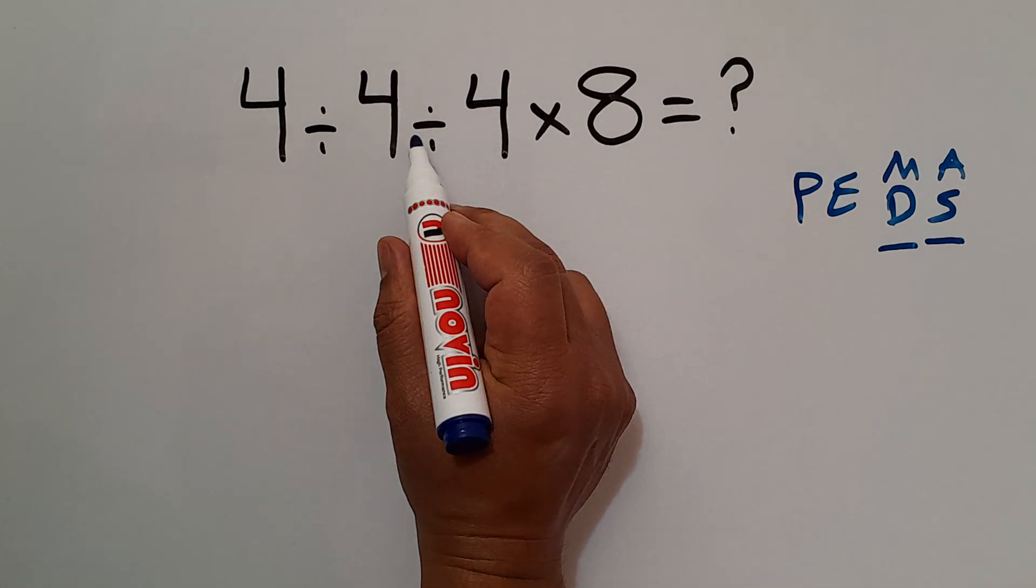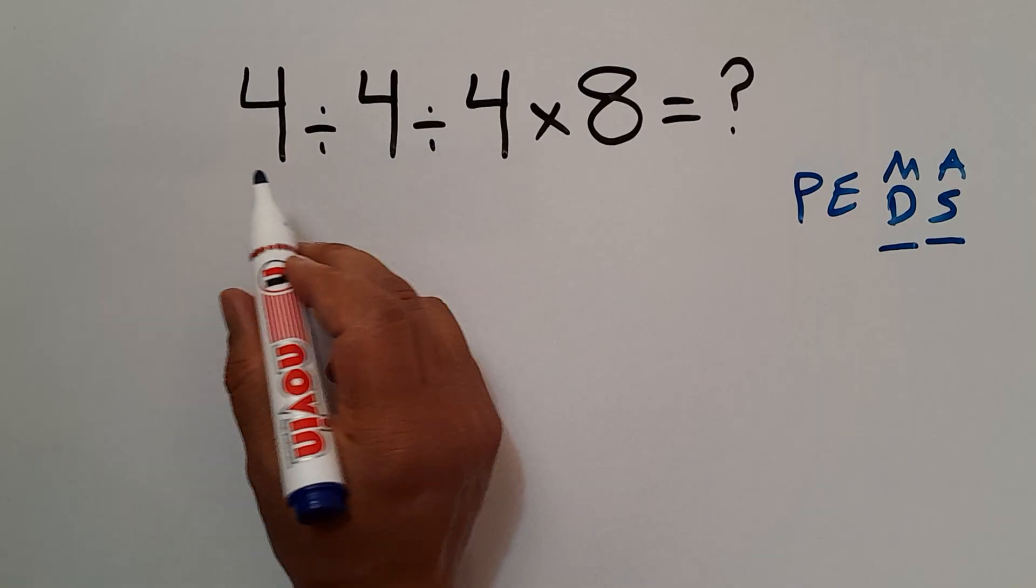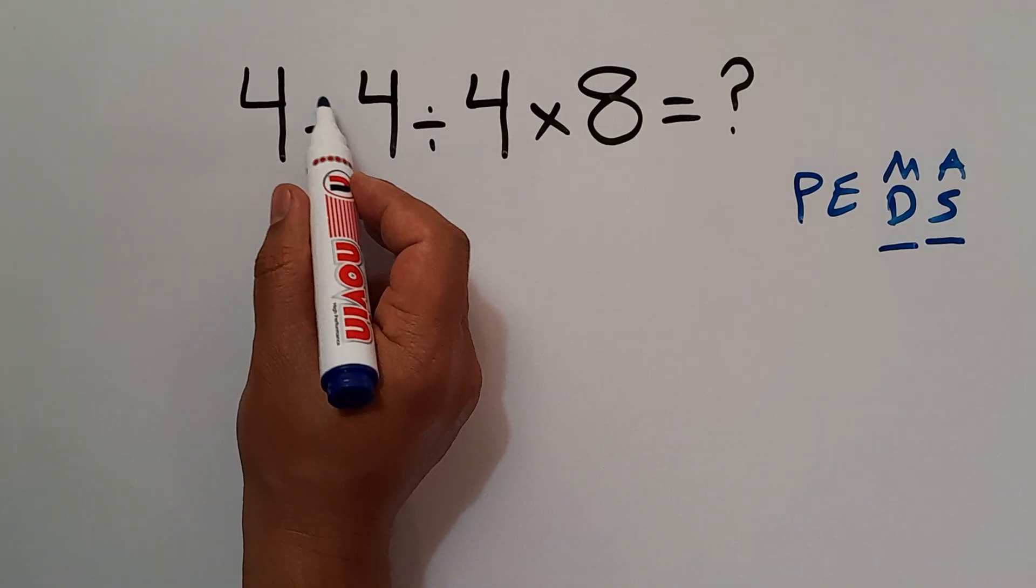Multiplication and division have equal priority, so we work from left to right: first this division, then this division, and finally this multiplication.